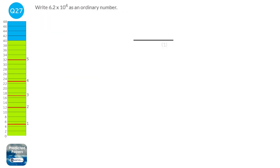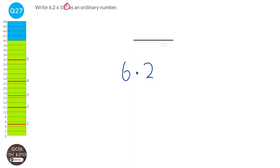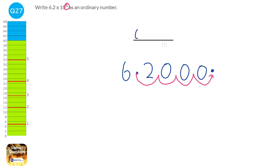Here we're given a standard form number and asked to make it an ordinary number. Starting with 6.2, we shift the decimal point. If the power is positive, our ordinary number is going to be big; if negative, it's a very small number. Since this is positive, we do four jumps to the right: 1, 2, 3, 4. The decimal point moves here, and we fill in the gaps with zeros. So our new number is 62 with three zeros, or 62,000.